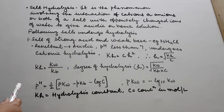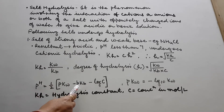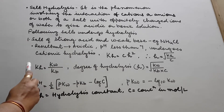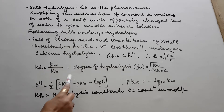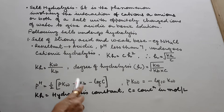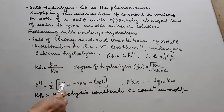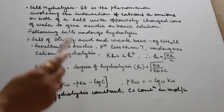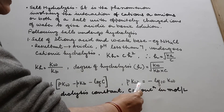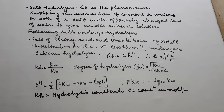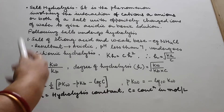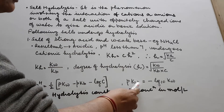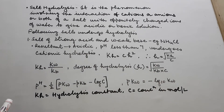For pH in cationic hydrolysis: pH = ½(pKW − pKB − log C). Here pKB = −log KB, and pKW = −log₁₀ KW. So whenever you see 'p' before a quantity, it means minus log of that quantity.